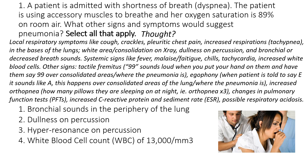We're going to take a minute to review all the signs and symptoms that somebody can present with when they have pneumonia. They could have local respiratory symptoms like a cough — it could be productive, it could be purulent, meaning a yellowish-green color. When you auscultate, you could hear crackles, also known as rales, or it could be worse like a ronchi sound. They could complain of chest pain when they breathe in, because it hurts to breathe through all that consolidated area, and we call that pleuritic chest pain.